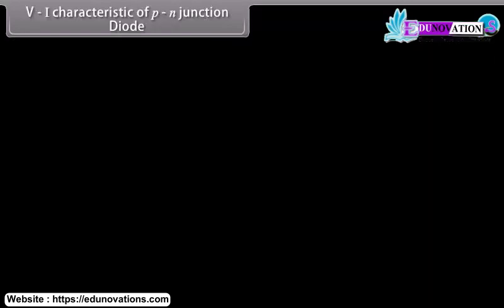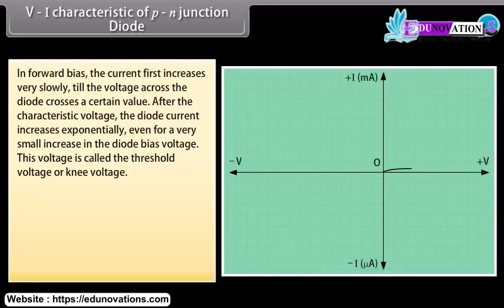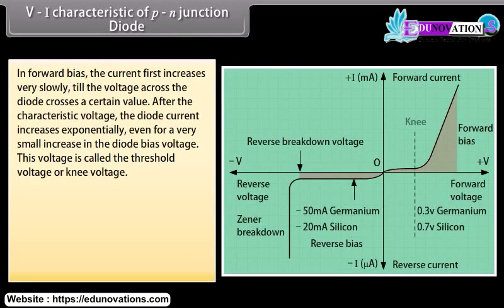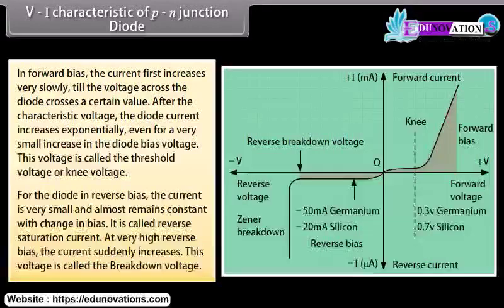In the V-I characteristic of a P-N junction diode: in forward bias, current first increases very slowly until the voltage crosses a certain value called the threshold voltage or knee voltage, after which current increases exponentially even for a very small increase in bias voltage. In reverse bias, the current is very small and almost constant — called the reverse saturation current. At very high reverse bias, the current suddenly increases; this voltage is called the breakdown voltage.